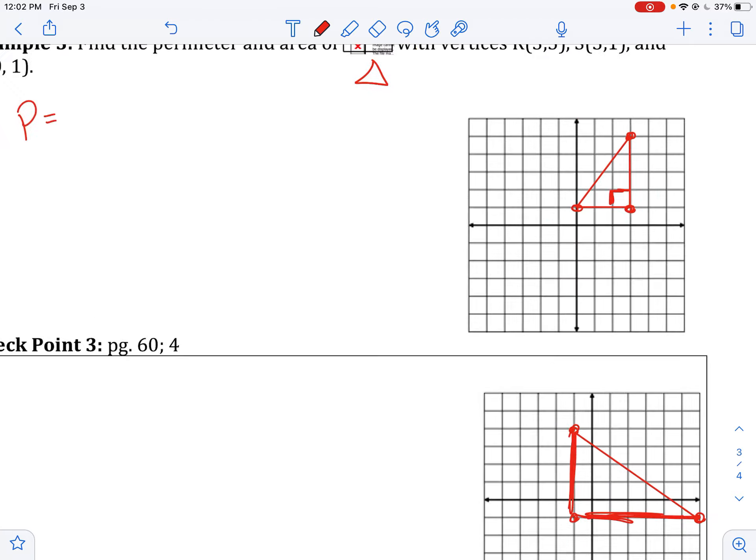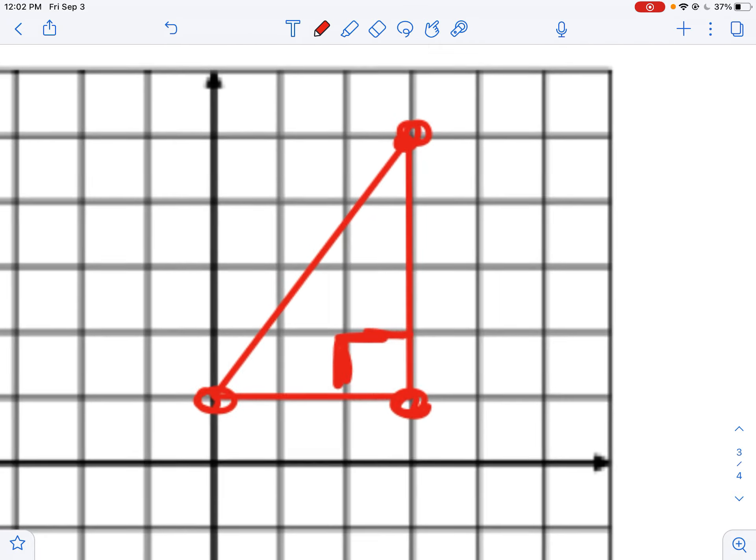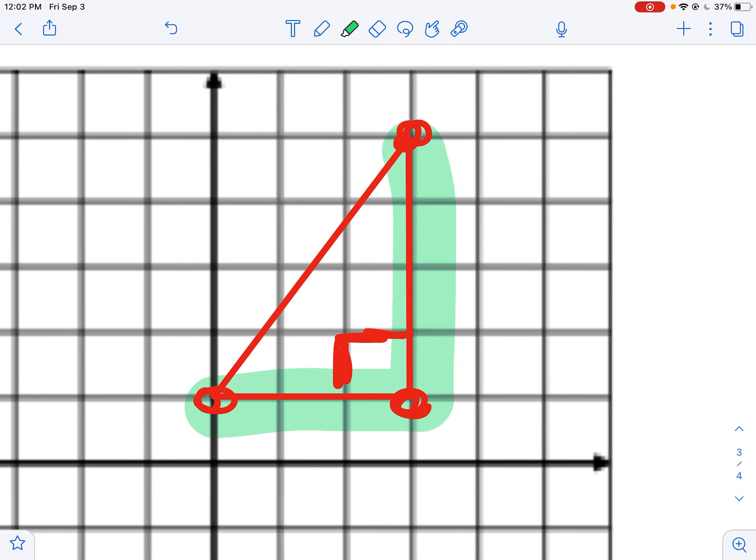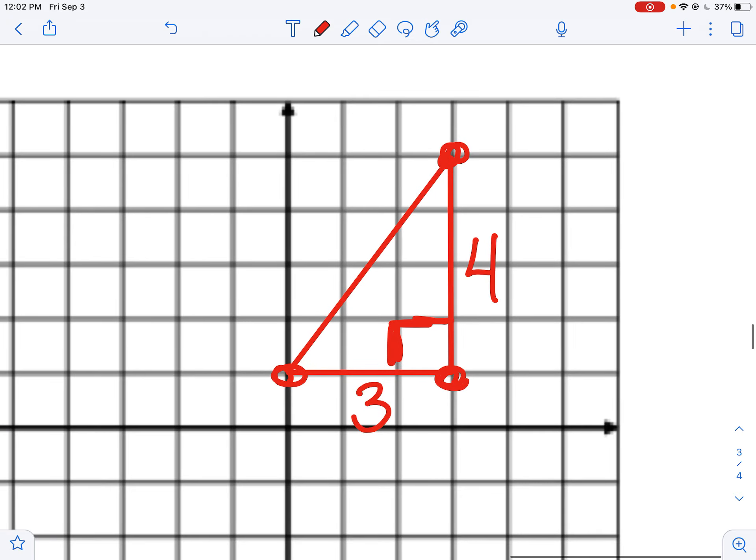The beautiful thing about these nice right triangles is that I can just count two of the sides. This is three. That's four. So I know what two of the sides are, but to find perimeter and area, I need to find that third side.